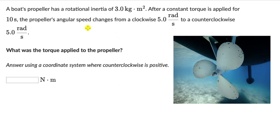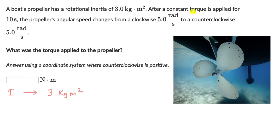There is a lot of information in this question. What I usually do is list down everything that I know, and then move on to the relations and the formulas. So first, all the information in this question: we have rotational inertia I = 3 kgm², and then we have a constant torque applied for 10 seconds.